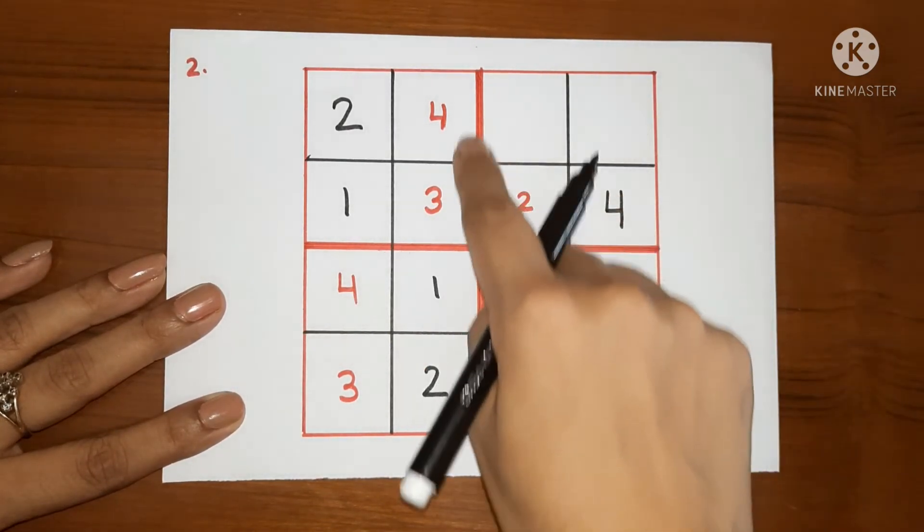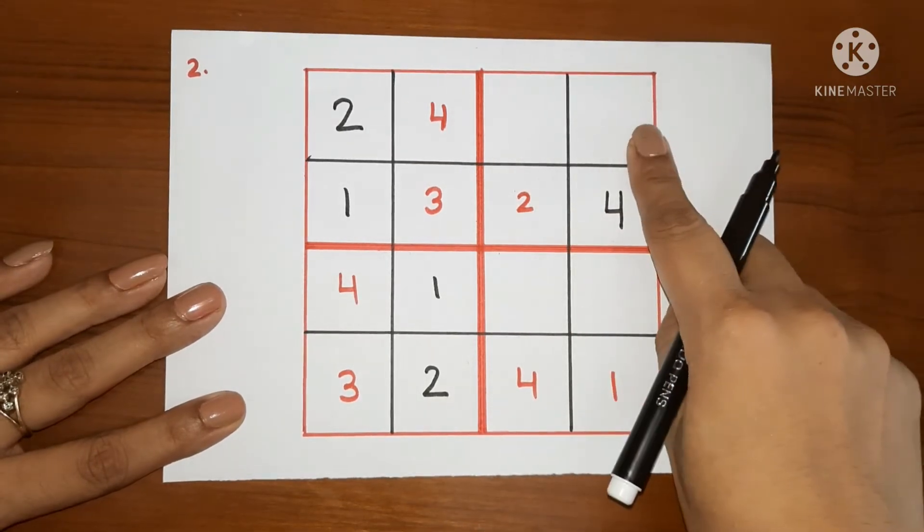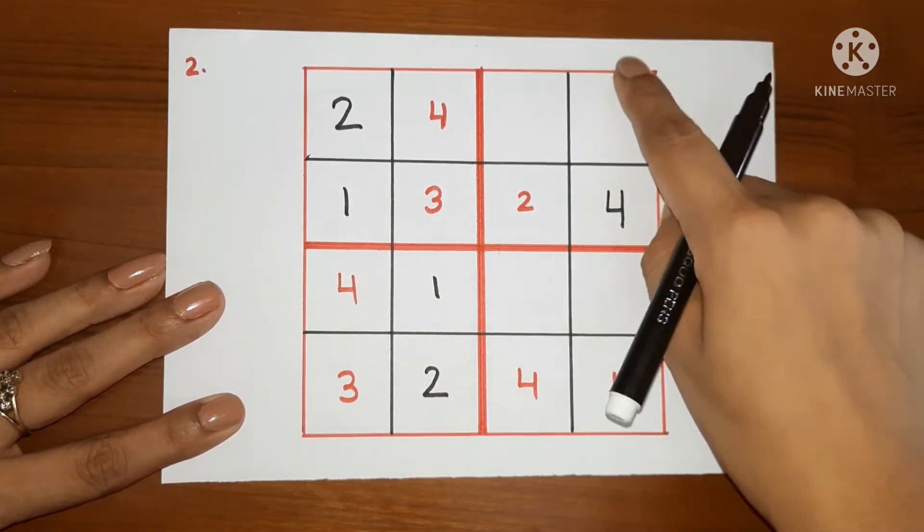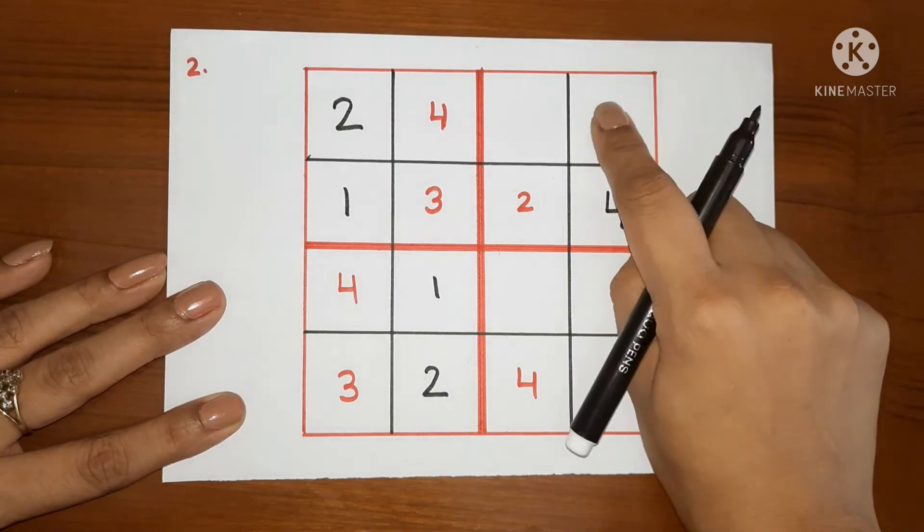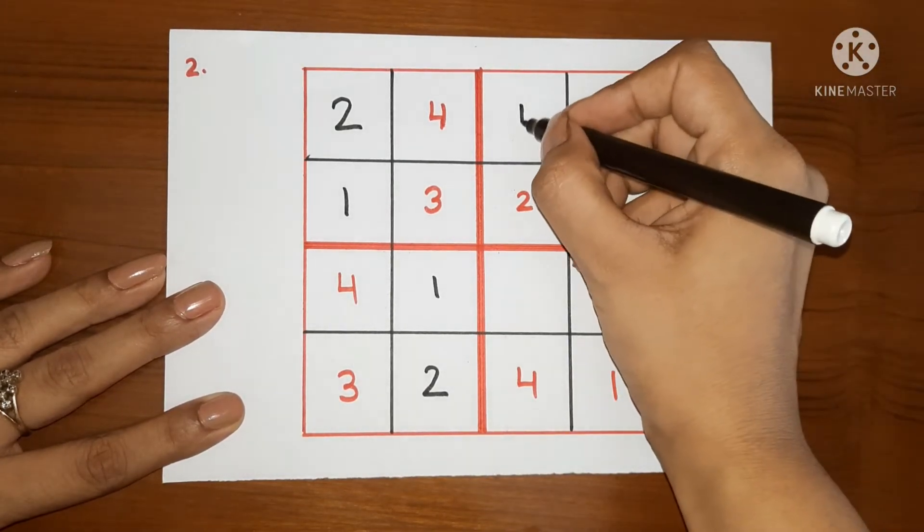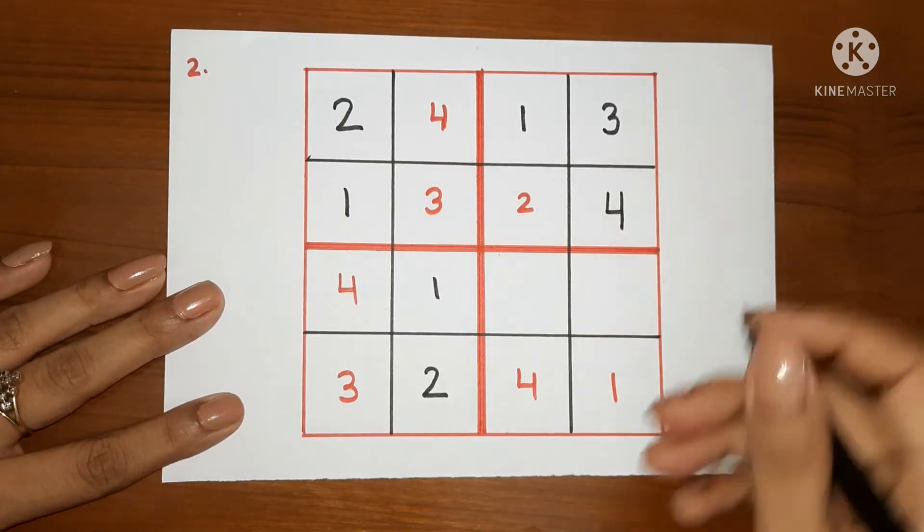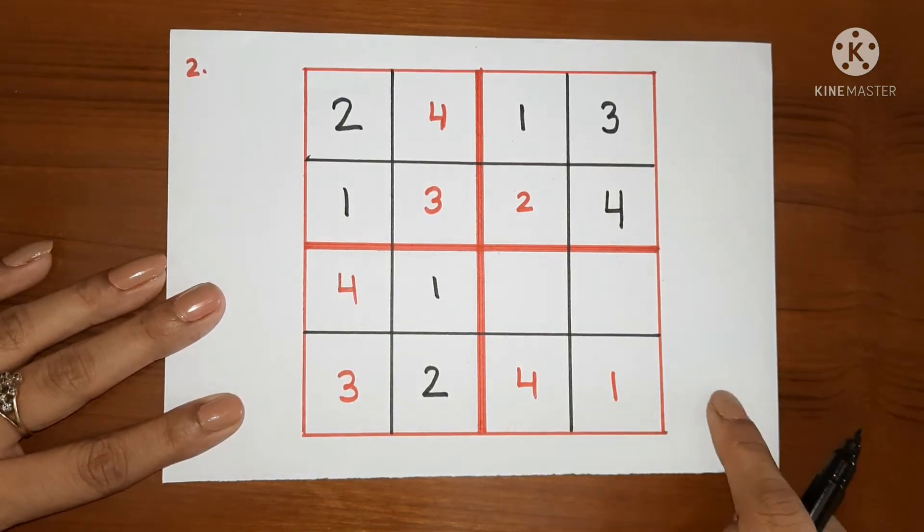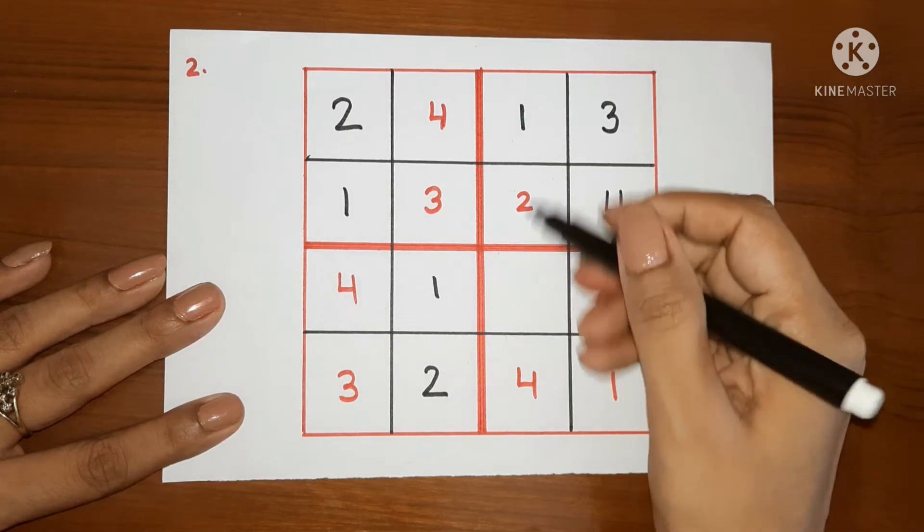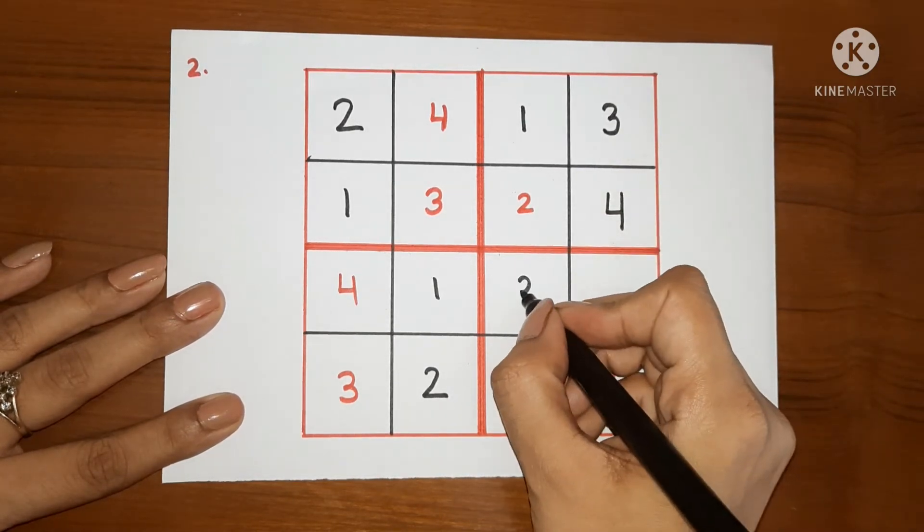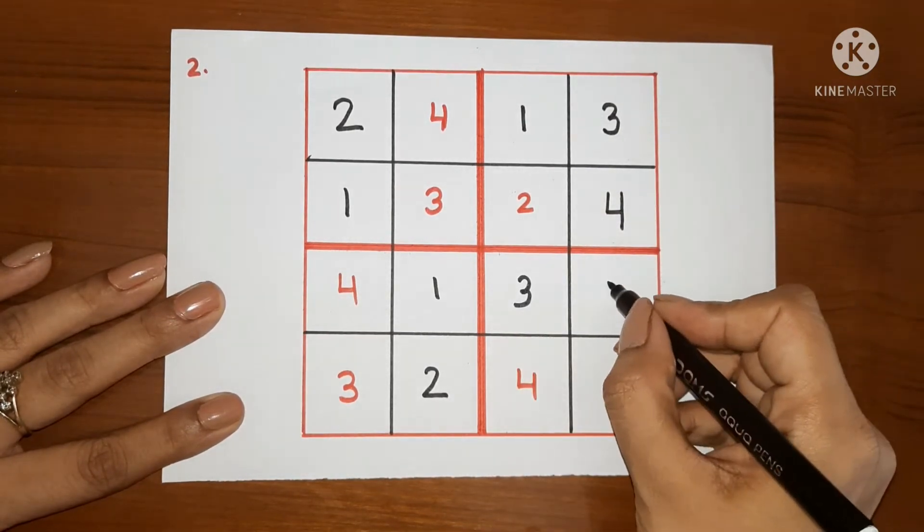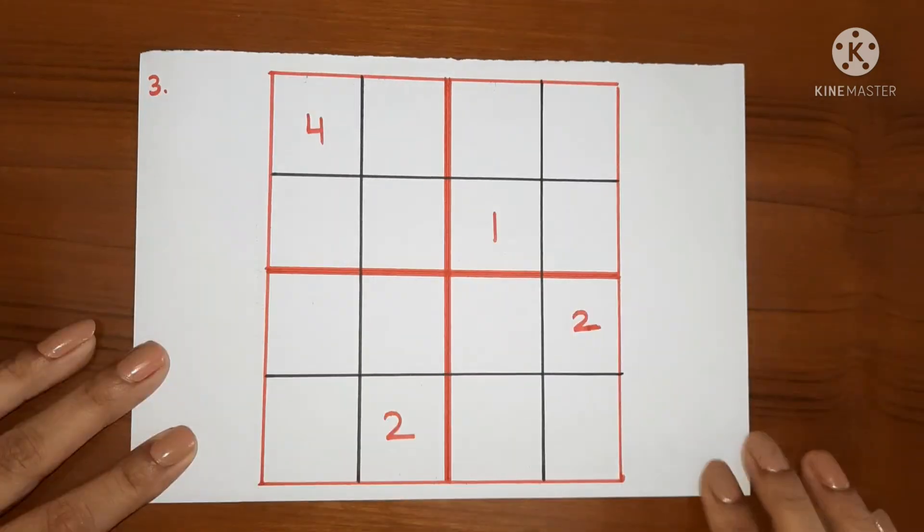And again, in this box, 1 and 3 are left. 1 is here in this column. So we cannot write 1 here. We will write 1 here. Only 1 number is left. That is 3. Again, same way 1 and 4 are here. 3 and 2 left. 2 is already here in this line. So we will write 3 here and 2 here.